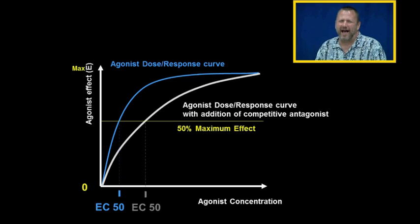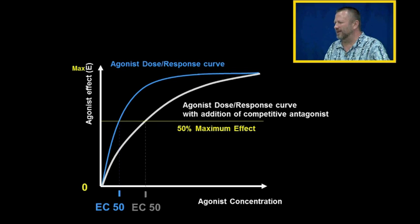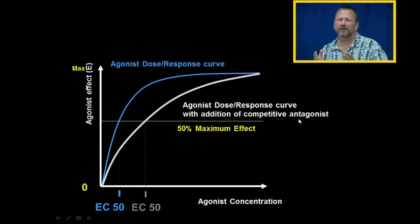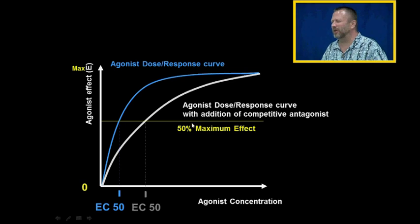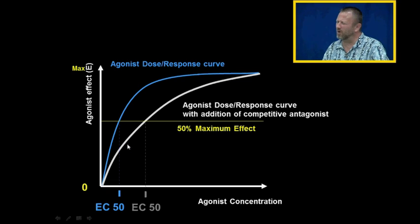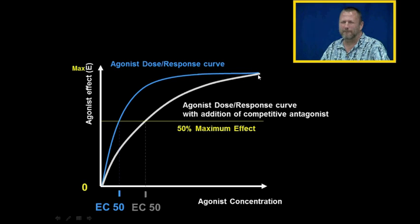Here is an agonist dose-response curve denoted in blue. The white curve is the agonist dose-response curve with the addition of competitive antagonist. With a fixed dose of competitive antagonist in solution, it takes more and more drug to achieve effect. But if I add enough drug, I will eventually overcome that competitive antagonist and reach maximal effect.